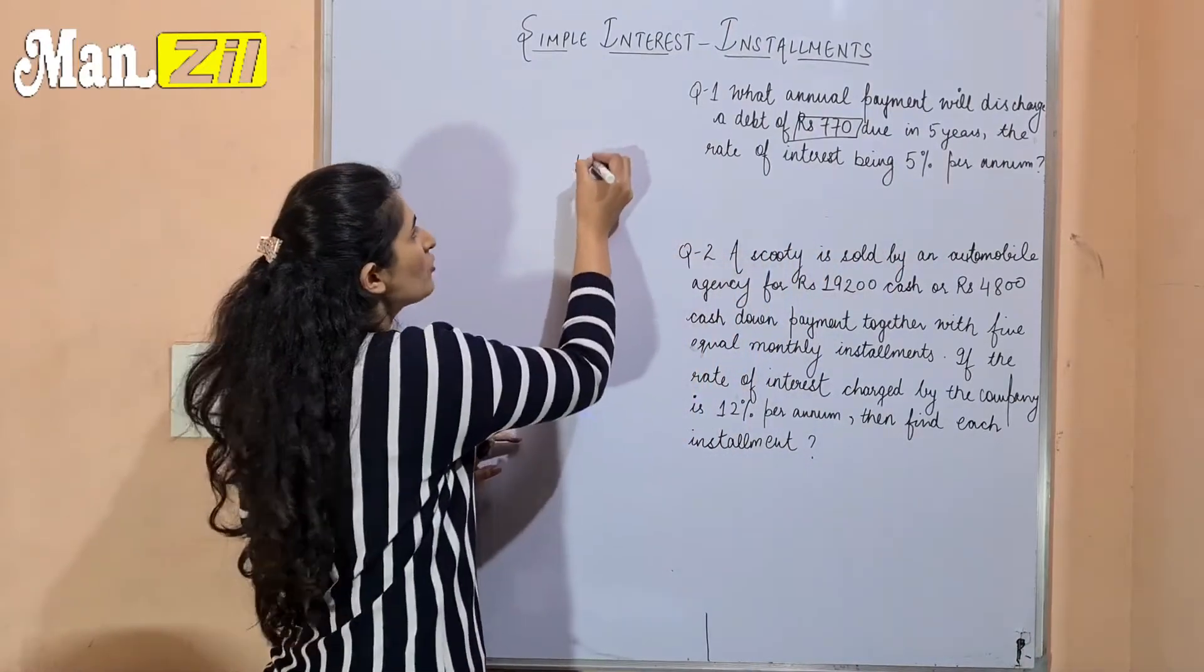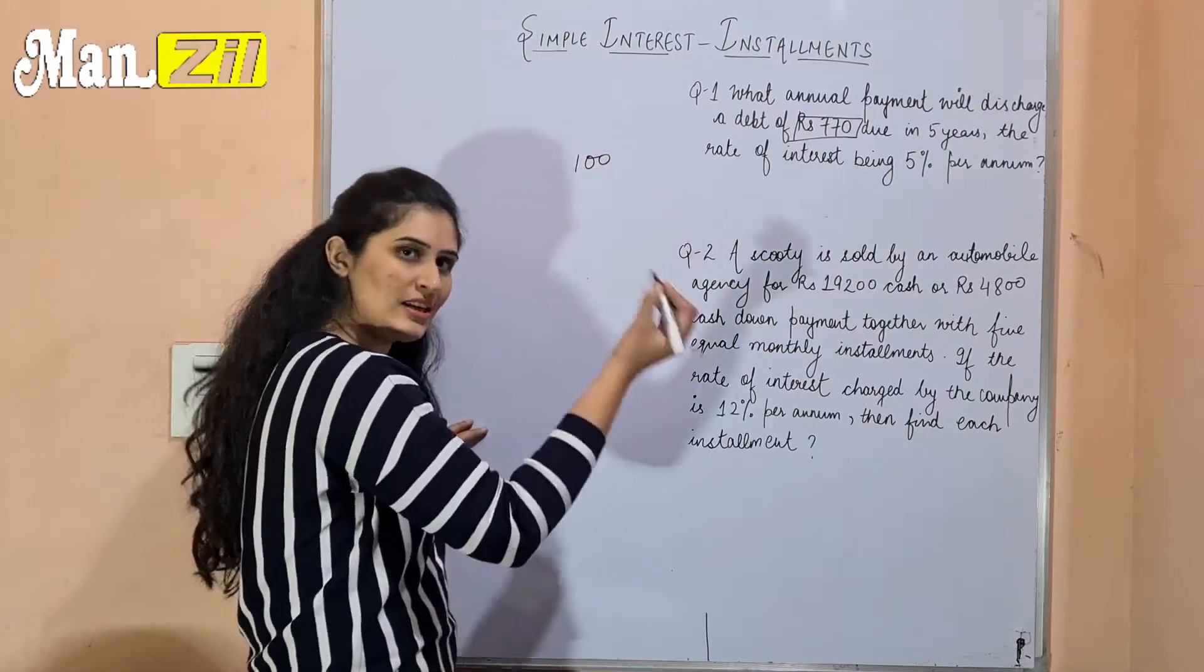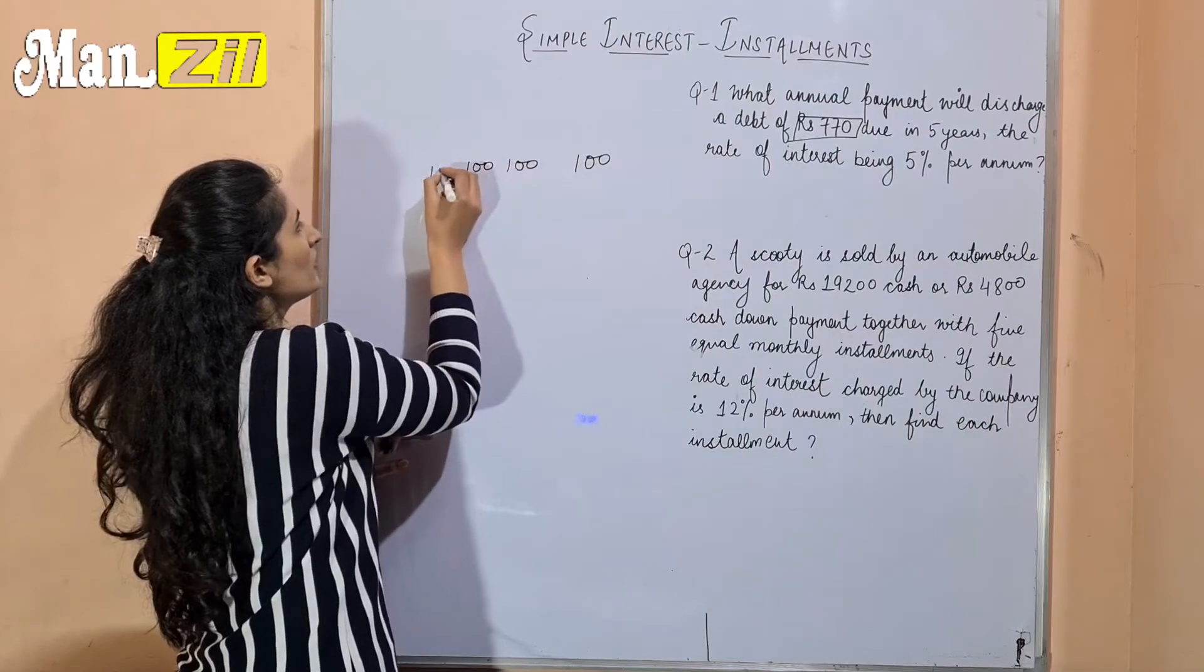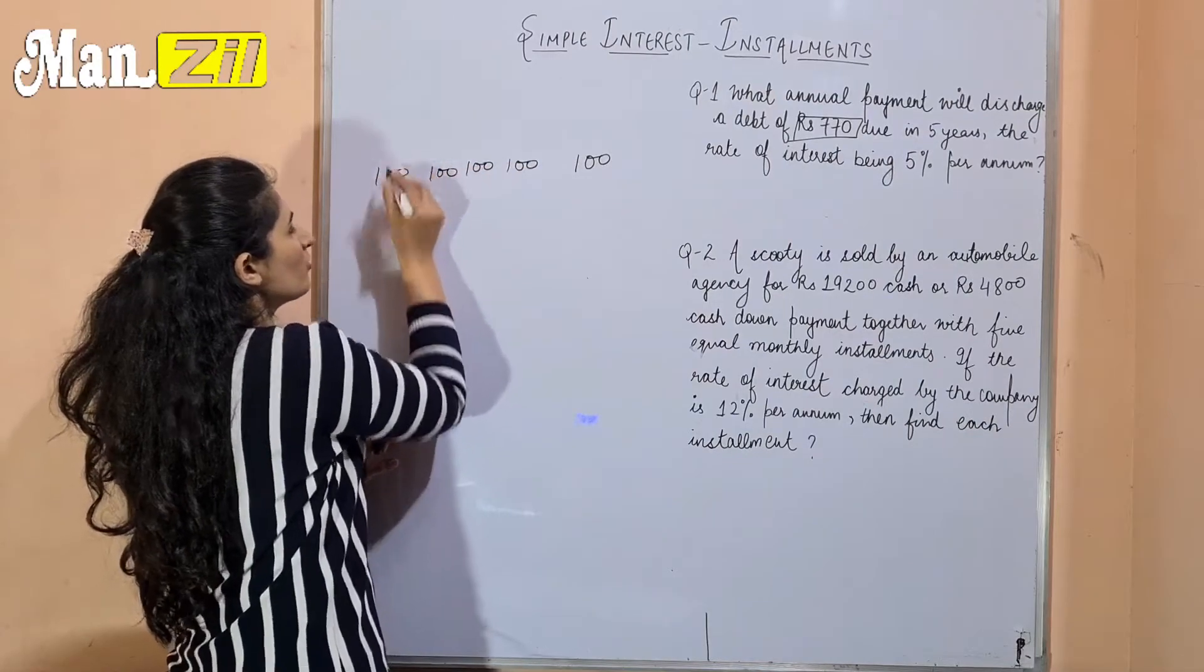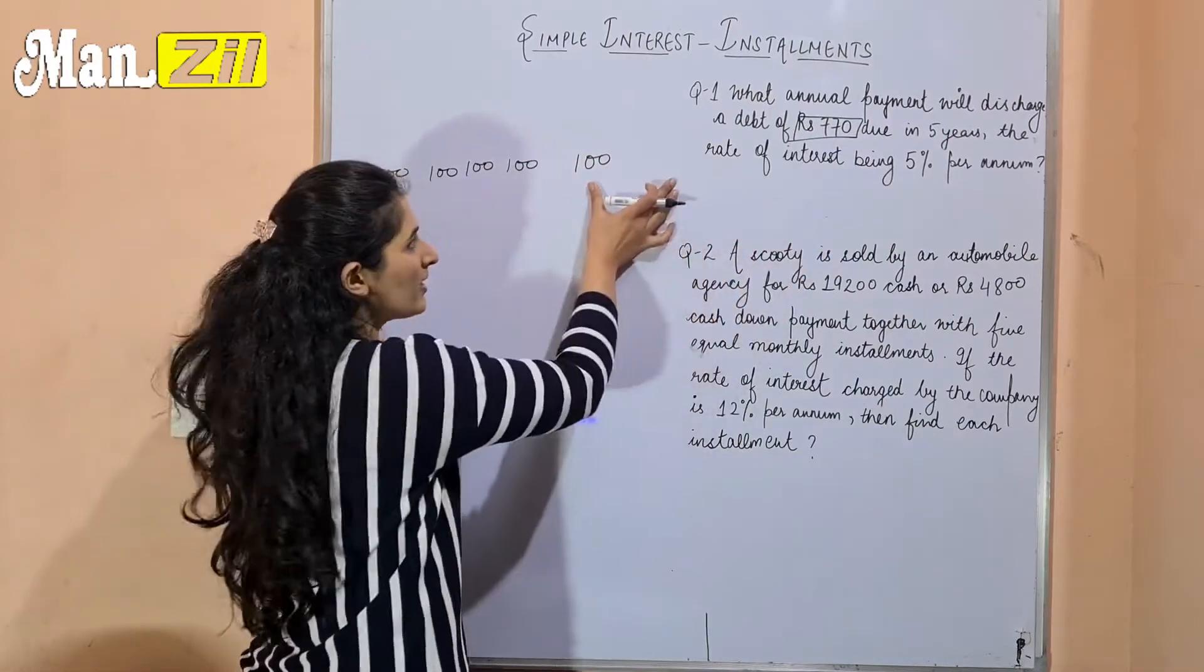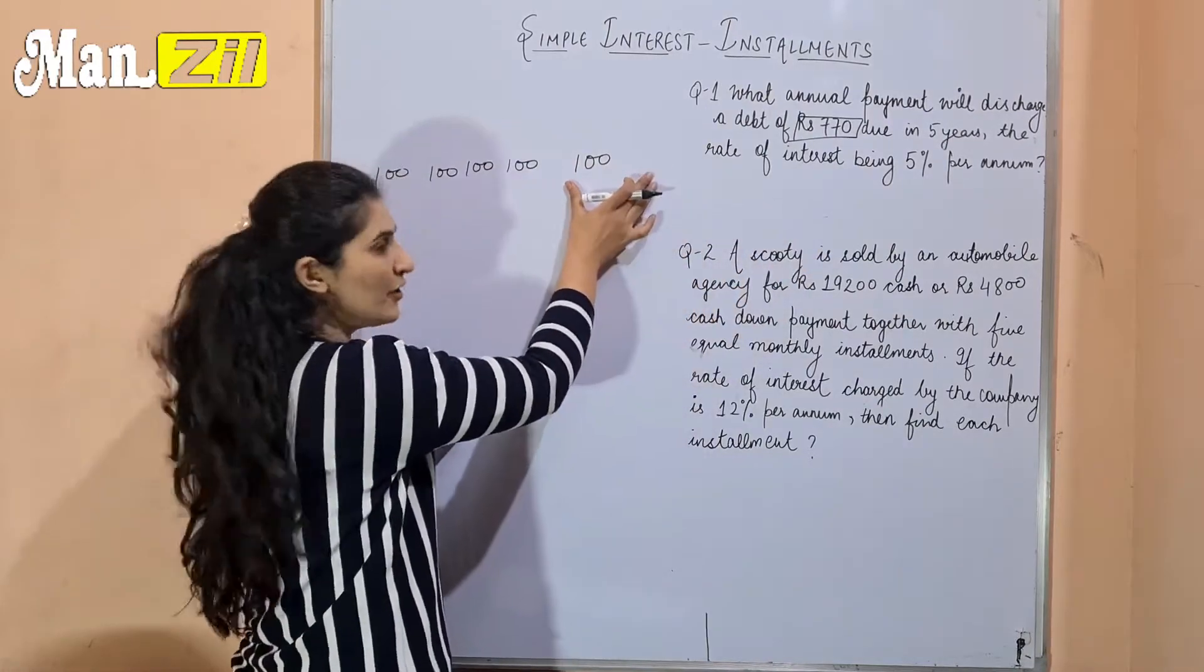First of all, we have to assume that our first installment will be 100, which we have to give every year. So here we have to give it for 5 years, so we have to give 100 installments. After that, we have to give 5% per annum, so in the first year it will be 100 units.